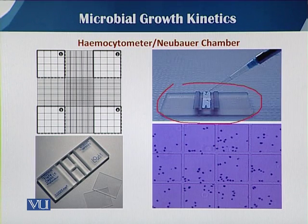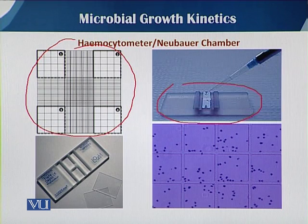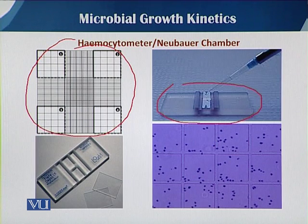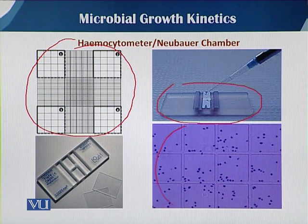The hemocytometer is a glass slide with standard cavities. It has different boxes — small, medium, and large. The large box dimensions in most hemocytometers are 1 millimeter long, 1 millimeter in width, and 0.1 millimeter in depth. By counting the cells in different compartments, we can estimate the total count in the culture medium.